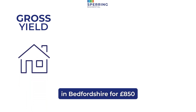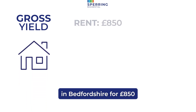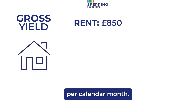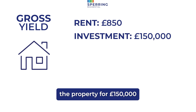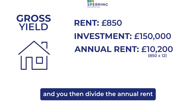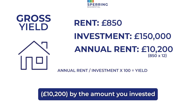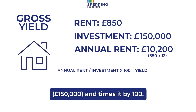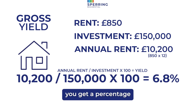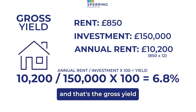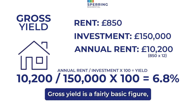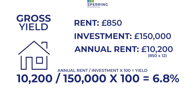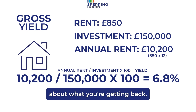Let's say you rent out a two-bedroom property in Bedfordshire for £850 per calendar month. If you originally purchased the property for £150,000 and you divide the annual rent — £10,200 — by the amount you invested — £150,000 — and multiply by 100, you get a percentage. That's the gross yield: in this case, 6.8%. Gross yield is a fairly basic figure, but it gives you a good idea of what you're getting back.